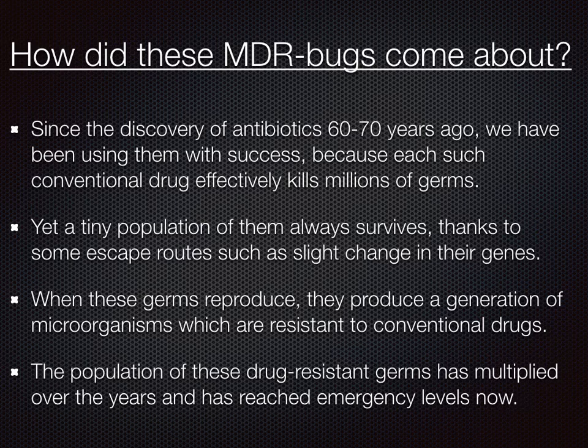Now we understand how drug resistance develops in microorganisms and how superbugs are formed. But this crisis arrived sooner than expected. Scientists say the superbug problem was supposed to come much later — maybe 20–30 years from now. But it arrived early, and scientists say it is because of our own actions as consumers of medicine. We have invited this crisis early.